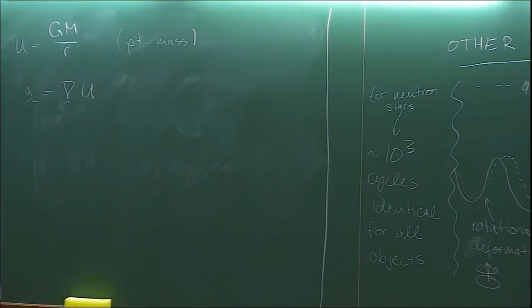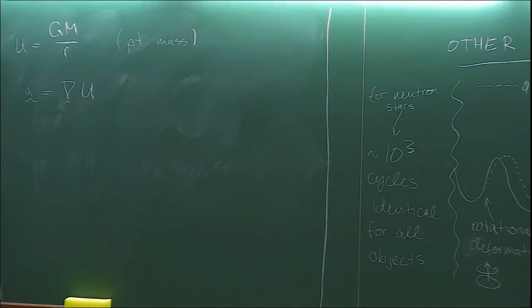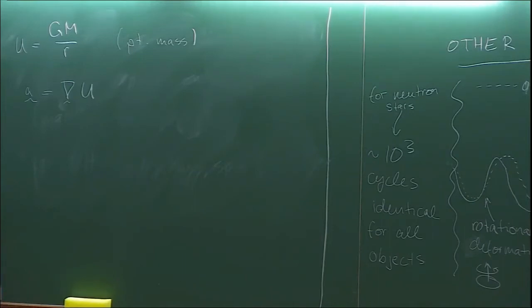To make it more analogous with GR, instead of having this kind of potential, we want to derive a field equation that this potential is a solution to. We also want to consider extended objects, not just point masses, because in the end our main goal will be to apply these tidal effects to neutron stars.